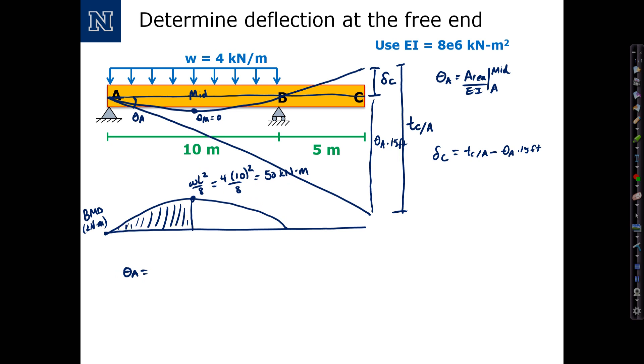Another rule that we talked about in class says that that area is equal to 2/3 times the area under this enclosed rectangle here, which is going to be the height of 50 kilonewton meters times the length here of 5 meters.